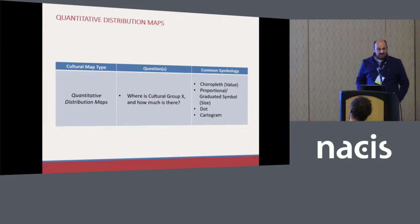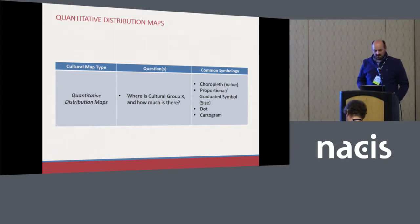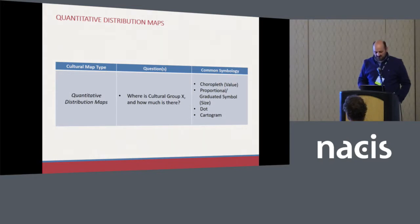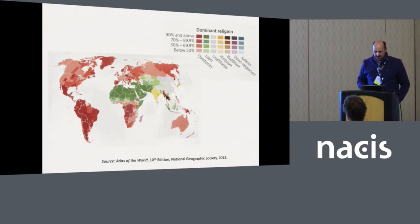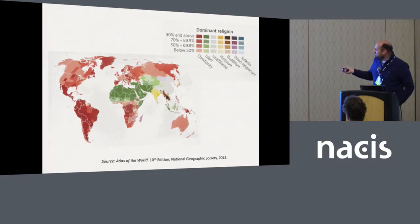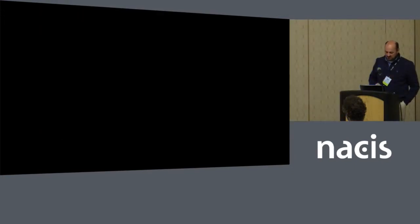Quantitative distribution maps address not only where is cultural group X, but also how much is there? The overwhelmingly favorite type of symbology used for these is choropleth maps using a value scheme. There are also some examples of proportional and graduated symbol maps, dot maps, and cartograms — very rarely, but a few exist. One example is a National Geographic map looking at dominant religions around the world, with a different hue for each religion and a value scheme showing how much for each.